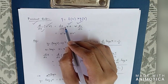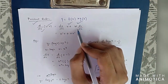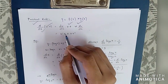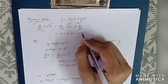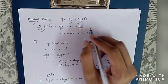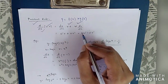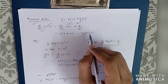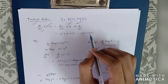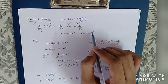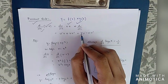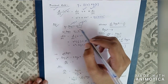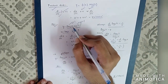So the first term is the differentiation of the first function into the second term, plus the second function's differentiation into the first term. Now let's go to number one example: y is equal to log(x) into x cubed.